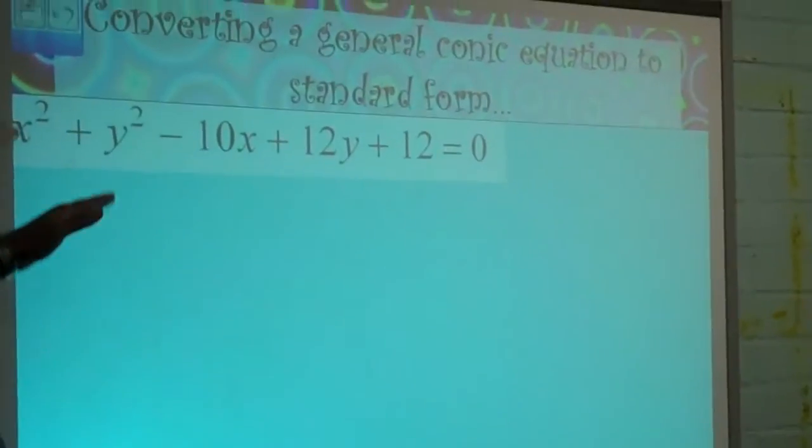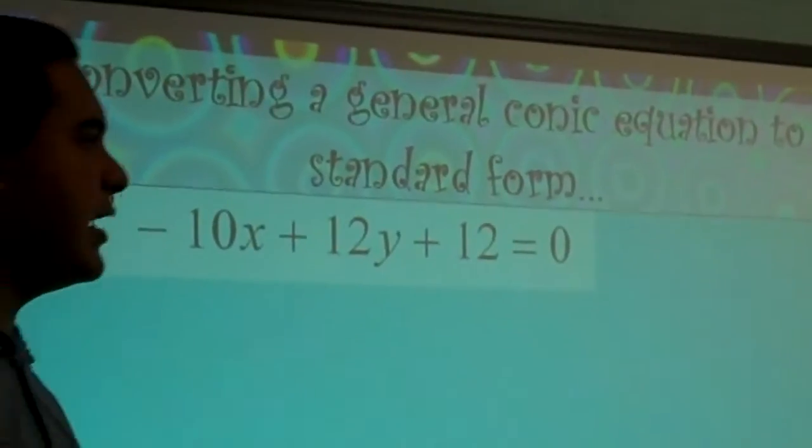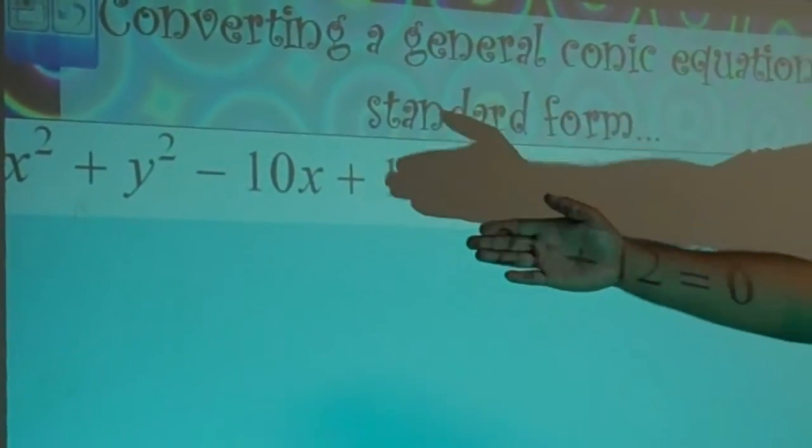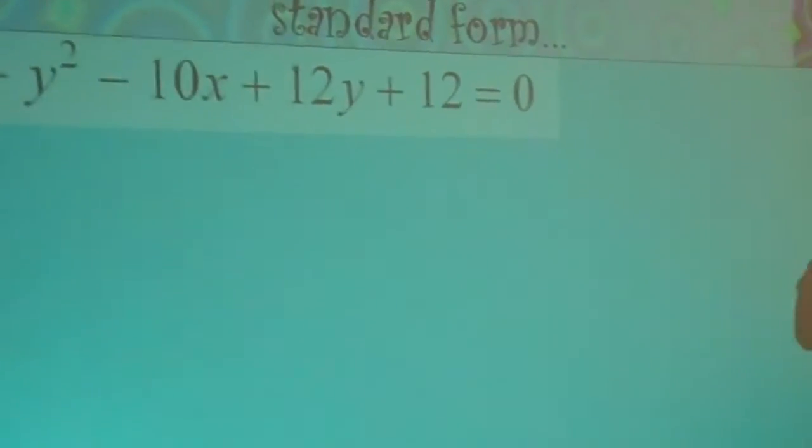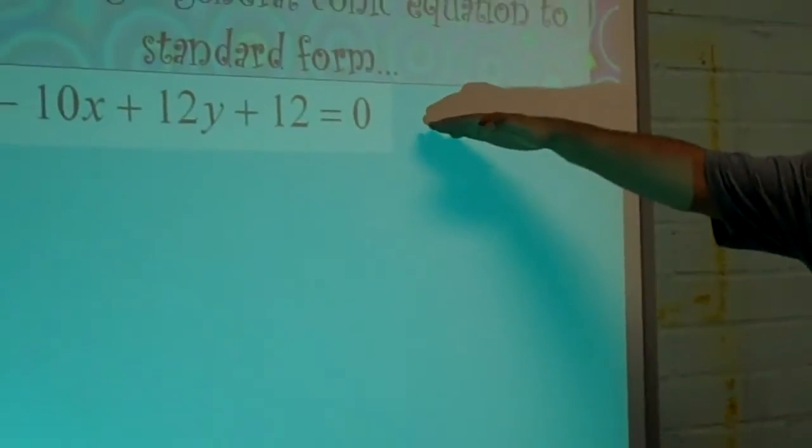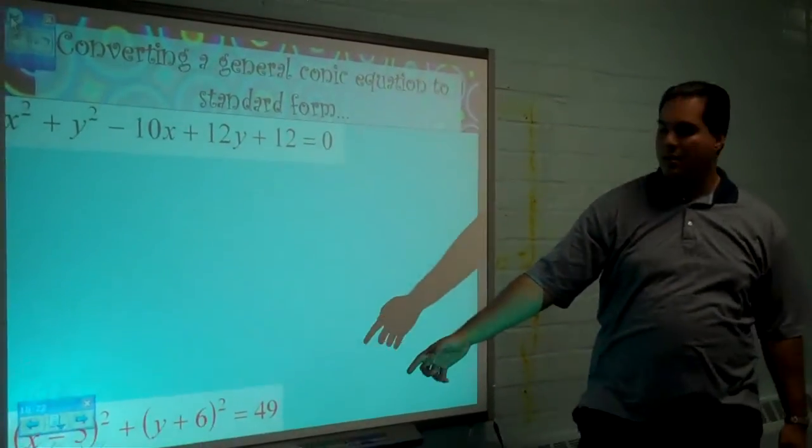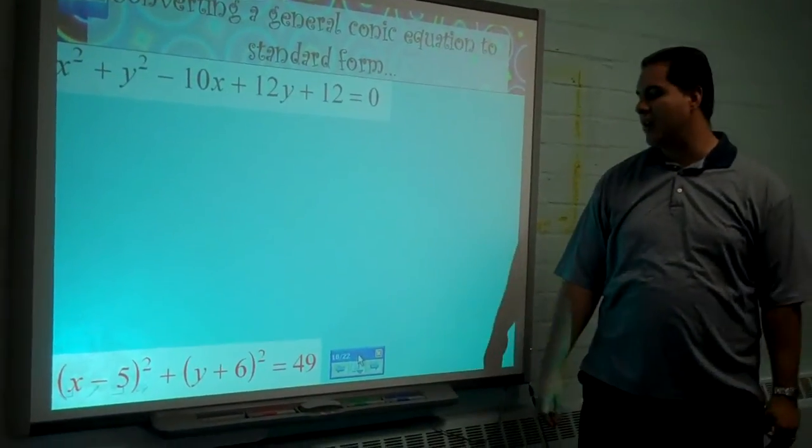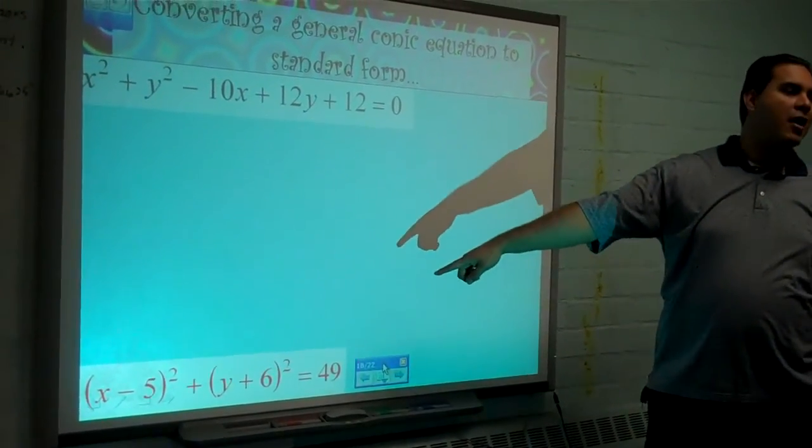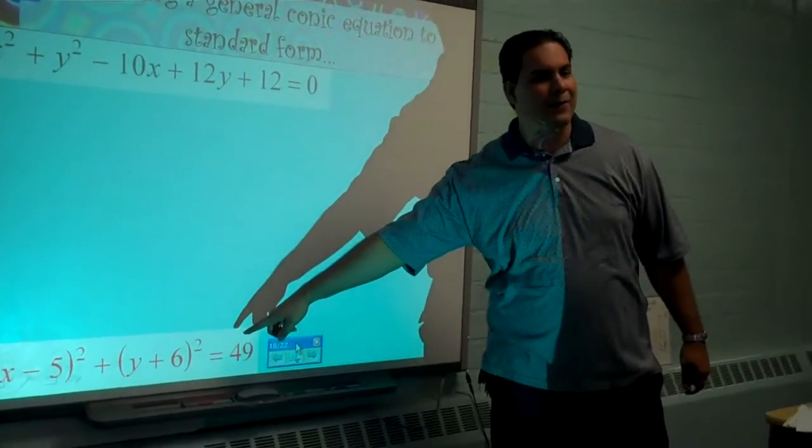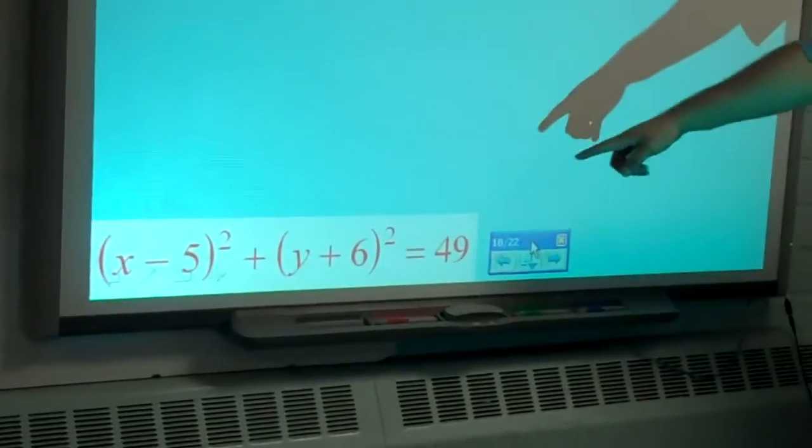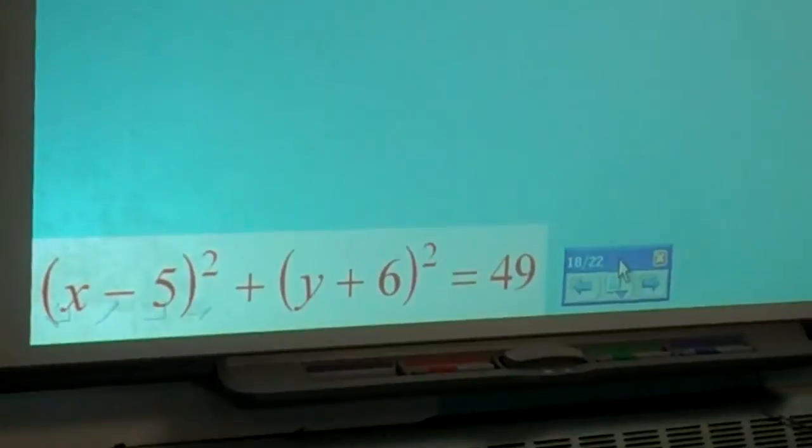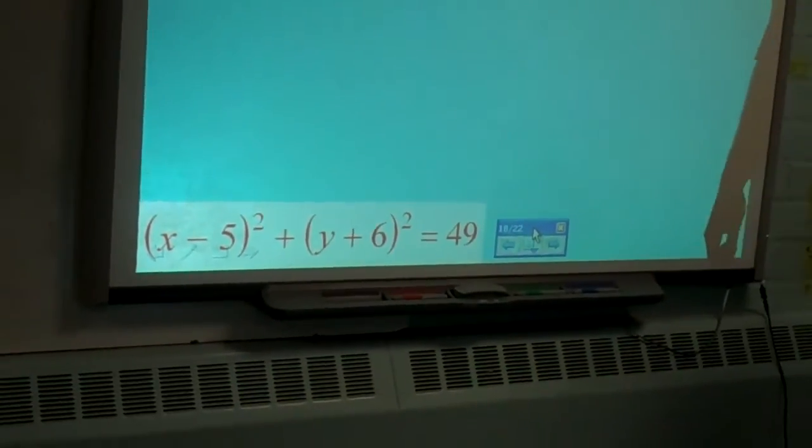Now, probably the most difficult thing to do with conics is normally you're given what we call a general form of a conic. Like this: X squared plus Y squared minus 10X plus 12Y plus 12 equals zero. And our goal is to convert it to standard form so we can graph it. Because when it's in standard form, it's easy to graph. X minus 5 squared plus Y plus 6 squared equals 49. On your marker boards, what is the center of this circle and the radius of that circle?